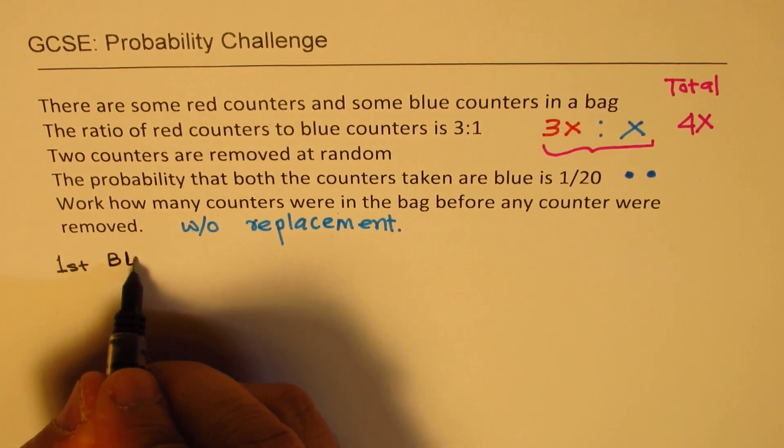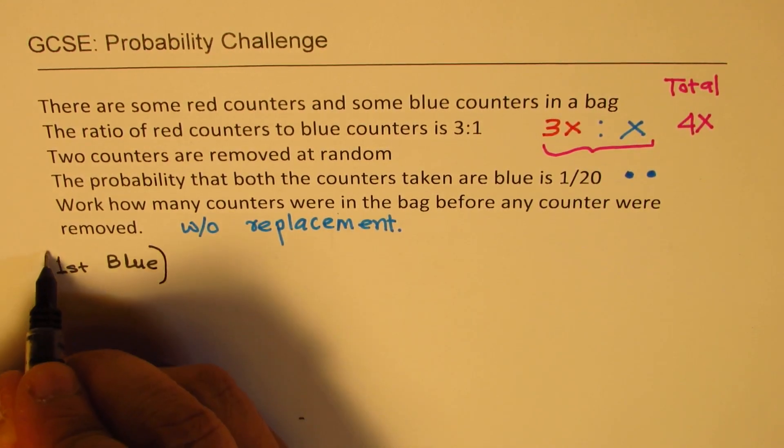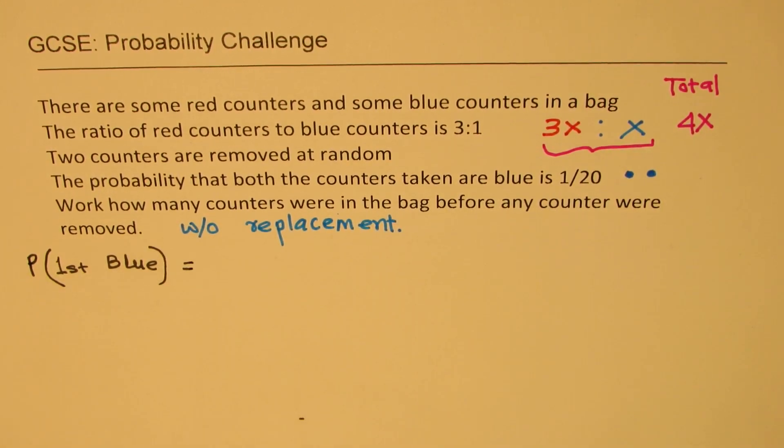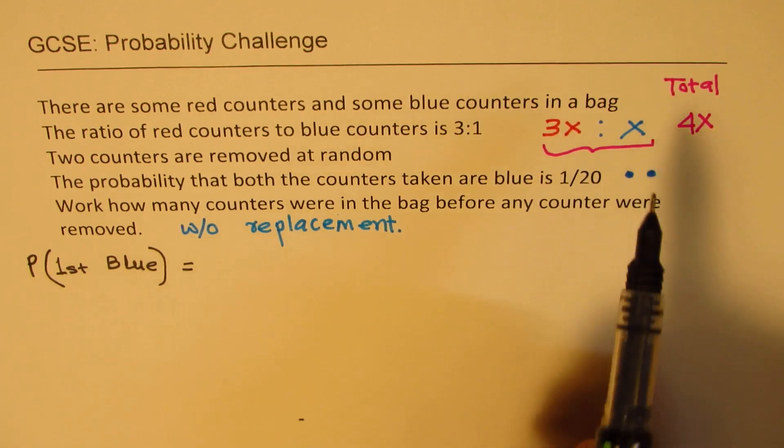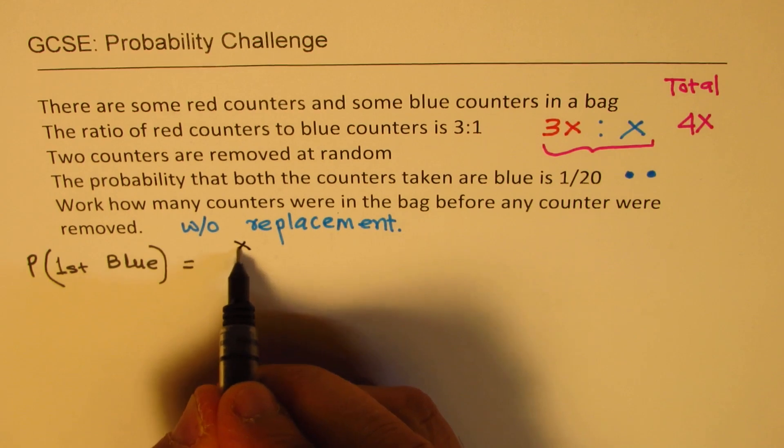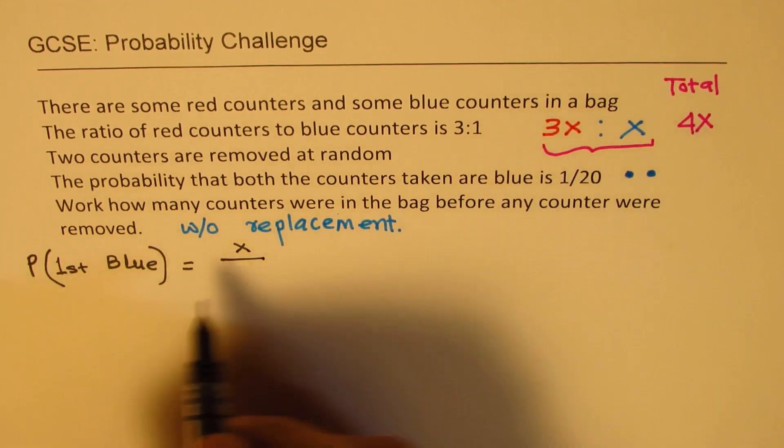So now let's say first blue. So we are looking for the probability of first blue. So probability is the ratio of success. What is the possibility? There are x blues. So x over total is 4x.